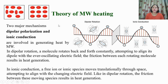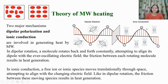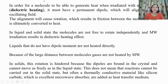Now we will see the theory of microwave heating in a chemical reaction. There are two major mechanisms: dipolar polarization and ionic conduction, which are involved in generating heat by microwave radiation. In dipolar rotation, the molecule rotates back and forth constantly, attempting to align itself with the ever-oscillating electric field. The friction between each rotating molecule results in generation of heat. In ionic conduction, a free ion or ionic species moves translationally through space attempting to align with the changing electric field, and the friction between these moving species also results in generation of heat.